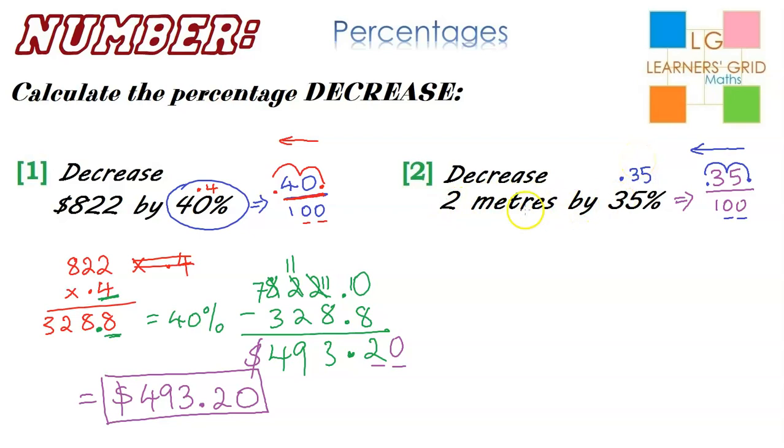So all I'm doing now is 2 multiplied by 0.35. So I'll rewrite that down here so I can solve it: 0.35 multiplied by 2. Let's solve that. So 2 times 5 is 10.